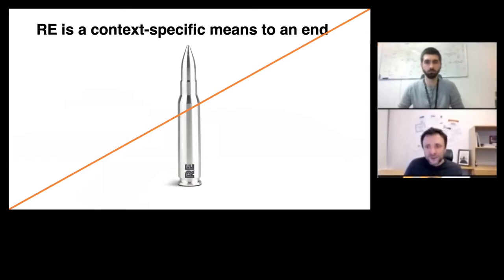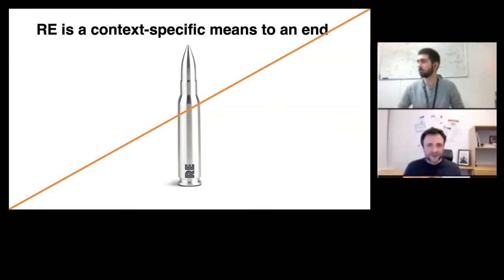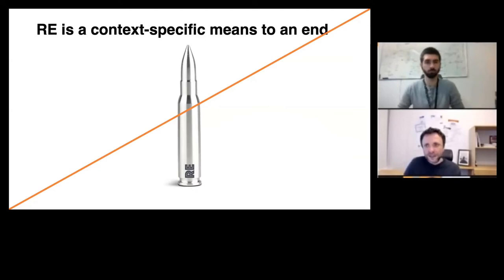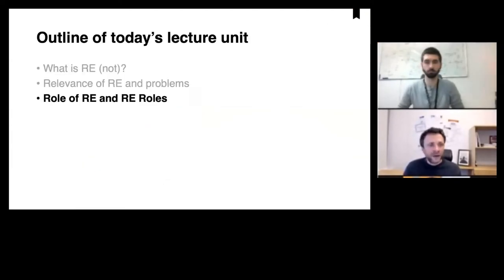Requirements engineering is something highly specific to a context. One thing that might work very well in one project situation — for example, agile requirements engineering — or one thing that might work well at a company — for example, specifying requirements with user stories or with use case models — might be completely alien to the needs and culture of the next company. And this is what we will be looking at now, in the very last part of today's lecture.